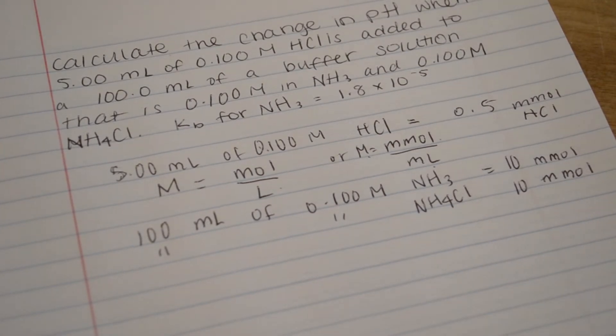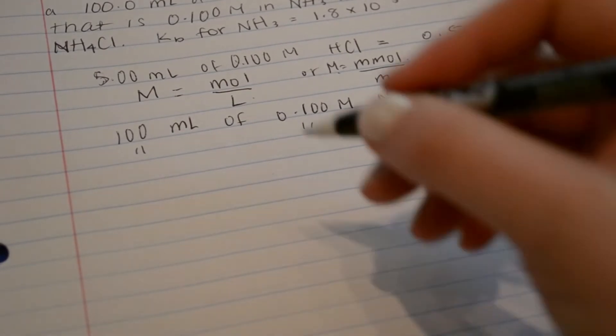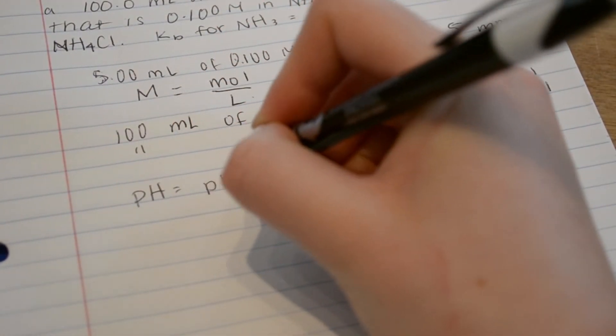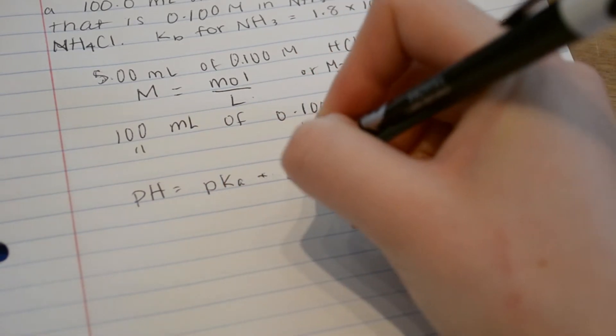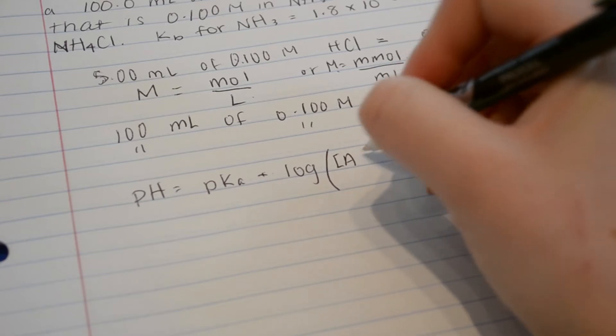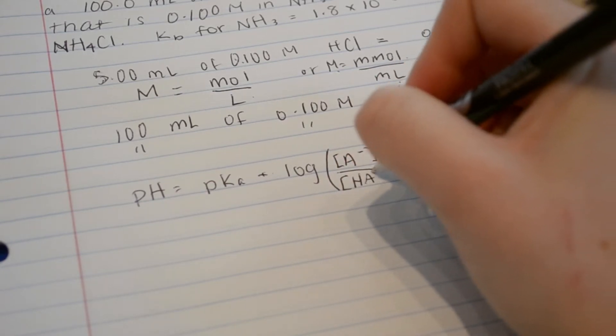To find the original pH without adding any HCl, we will use the Henderson-Hasselbalch equation, which is pH equals the pKa plus log of the concentration of the base over the concentration of the acid.